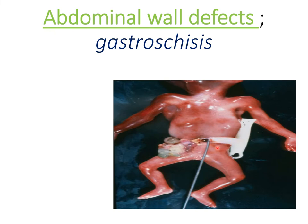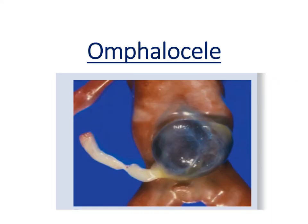Gastroschisis occurs when the lateral body wall fails to close in the abdominal cavity, therefore the intestines herniate out of the abdominal cavity to the outside of the body. As you can see here, we have the abdominal loops, and this defect is usually found to the right of the umbilicus.